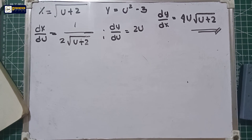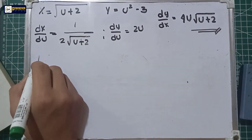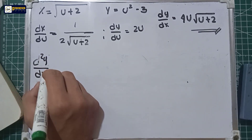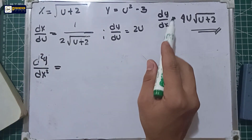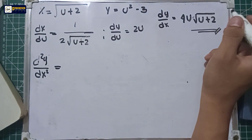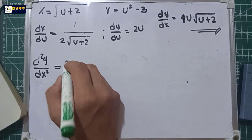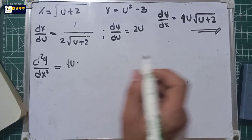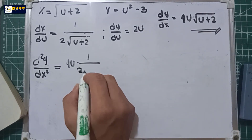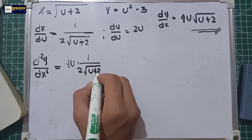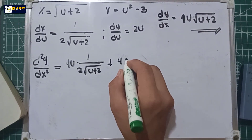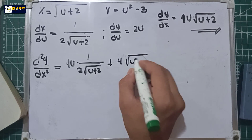So the first derivative dy over dx is equal to 4u times the square root of u plus 2. For the second derivative, d²y over dx² under the parametric form equals the derivative of dy over dx. We apply the product rule: 4u multiplied by the derivative of square root of u plus 2, which is 1 over 2 square root of u plus 2, plus the derivative of 4u, which is 4, multiplied by square root of u plus 2.